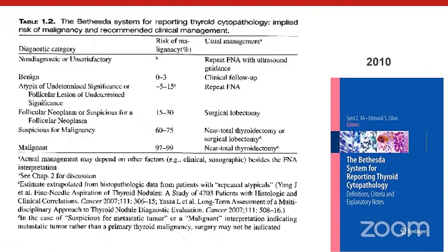The pathology community anticipated this need and published the first edition of the Bethesda reporting system, modeled after the Bethesda reporting system for cervical cytology. It turned cytology diagnosis from a more descriptive approach into categorical diagnoses. We have six categories: non-diagnostic, benign, AUS, FN/SFN, suspicious for malignancy, and malignant. In 2010, the associated risk of malignancy was defined — important for guiding clinical management.